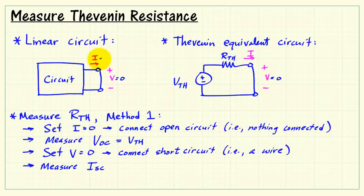Measure the short circuit current that flows through this wire using a DMM configured as an ammeter.